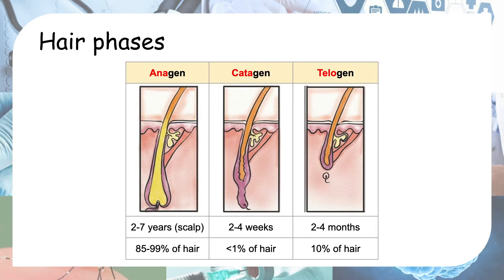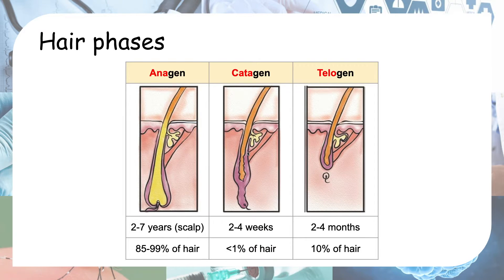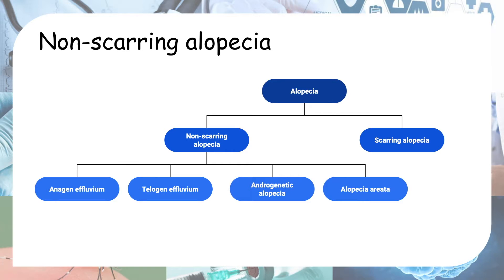Next, hair phases. Your hair undergoes three phases. First is the anagen phase, which is the growth phase — the longest phase. Then comes the catagen phase, the transformation phase where hair follicles undergo apoptosis and become smaller. Then comes the telogen phase, which is the resting phase. There are four non-scarring alopecias: anagen effluvium, telogen effluvium, androgenetic alopecia, and alopecia areata.